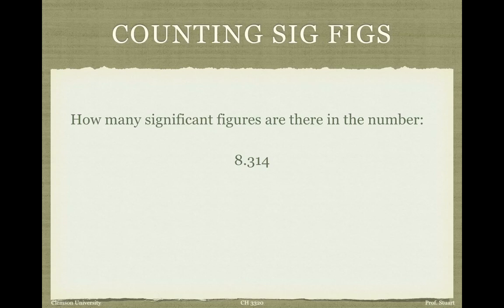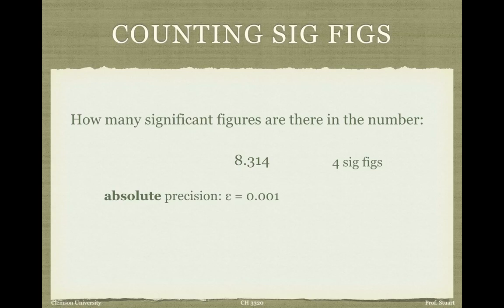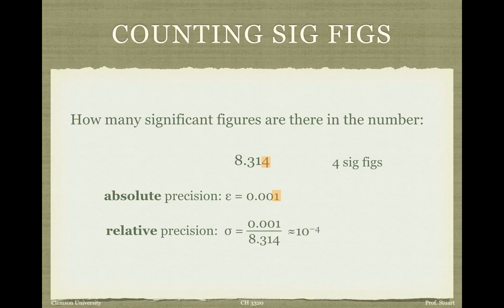Starting with an easy question: how many sig figs are in the number 8.314? You count the number of digits — there are four sig figs. Sig figs are one of a couple of ways of measuring the precision of a number. The absolute precision of that number is one one-thousandth. The relative precision is one one-thousandth divided by the magnitude of the number, which works out to roughly one part in 10 to the fourth — or one part in 8,314 to be precise. That number four is where we get four sig figs.